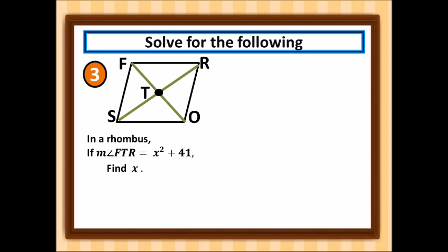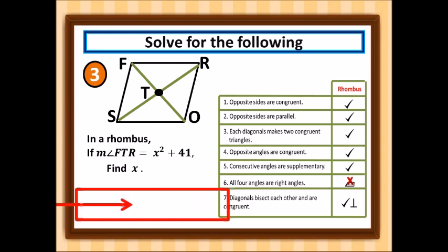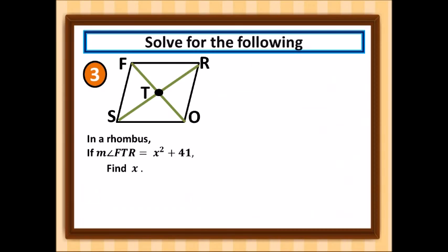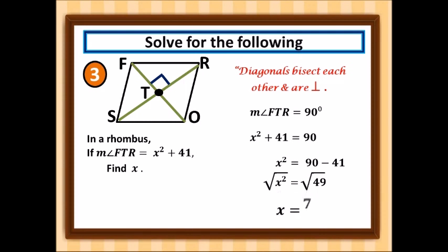For the third problem, we have rhombus FROS with diagonal FO and diagonal SR intersecting at point T. Given that the measure of angle FTR = x² + 41, find the value of x. In a rhombus, the diagonals are perpendicular, so angle FTR = 90 degrees. Therefore x² + 41 = 90, giving x² = 49, and taking the square root of both sides, x = 7.